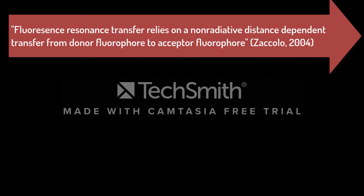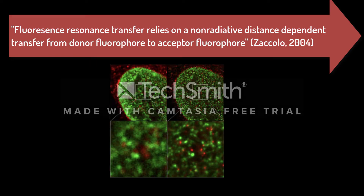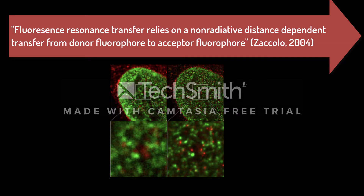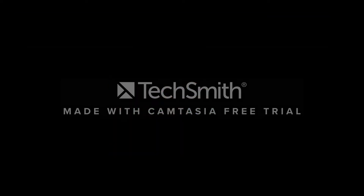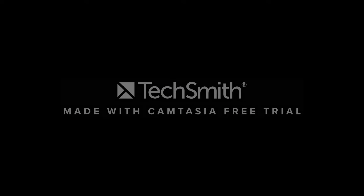Where there are advantages, there are always shortcomings. One of the key shortcomings of GFP is that fluorescence resonance energy transfer relies on a non-radiative, distance-dependent transfer from donor fluorophore to acceptor fluorophore. This distance is typically around 6 nanometres, meaning there are limitations on the effective thickness or depth of sample — as thickness increases, the risk of out-of-focus signals also increases. The sensitivity to distances and brightness of the fluorescent protein means availability of instrumentation such as standard laser lines can be limited depending on FP selection. Fluorophore cross-talk can occur when samples have more than one fluorescent marker, and when both markers are excited when only one is targeted, it can lead to confused results.